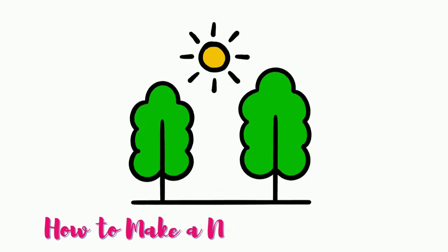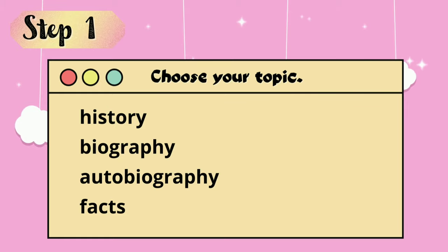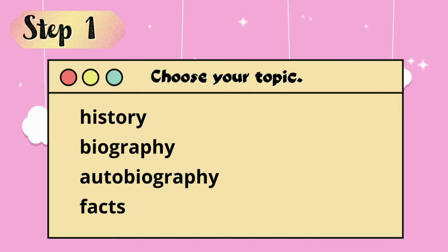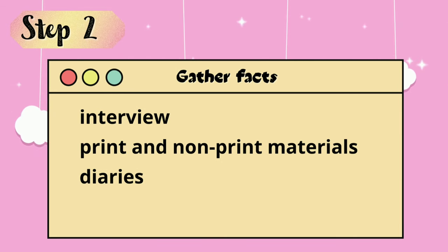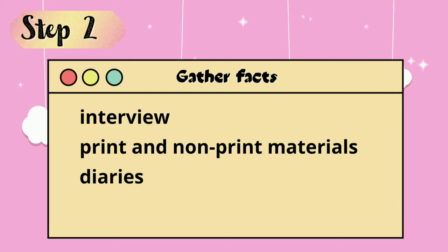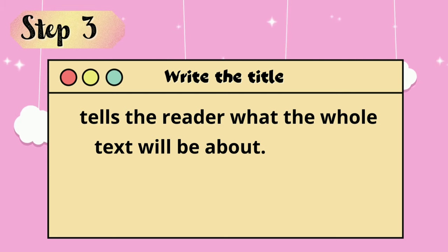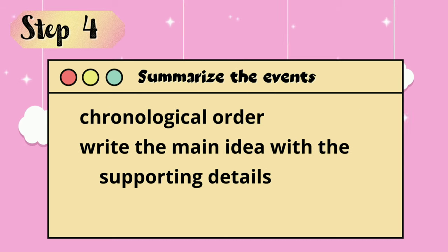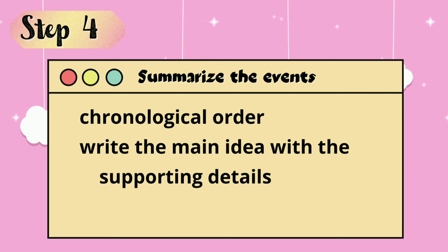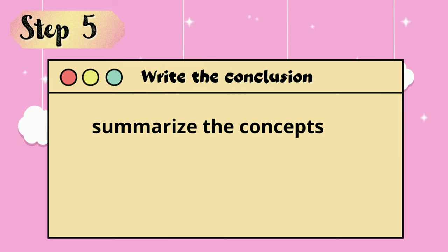Let's study how to make a non-fictional story. Step 1: Choose your topic — do you want your story to tackle history, biography, autobiography, or other facts? Step 2: Gather facts through interview, print and non-print materials, or diaries. Step 3: Write the title, which will tell the reader what the whole text will be about. Step 4: Summarize the events in chronological order and write the main idea with supporting details. Step 5: Write the conclusion and summarize the concepts.